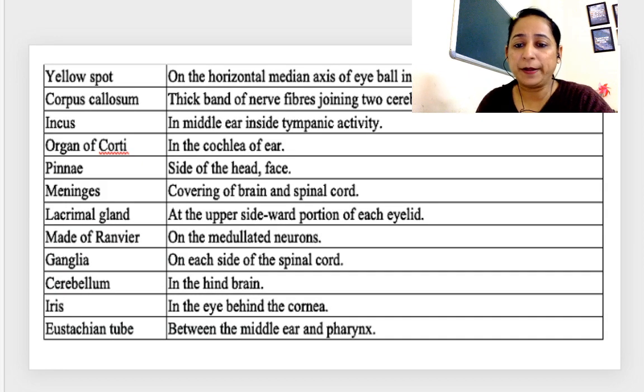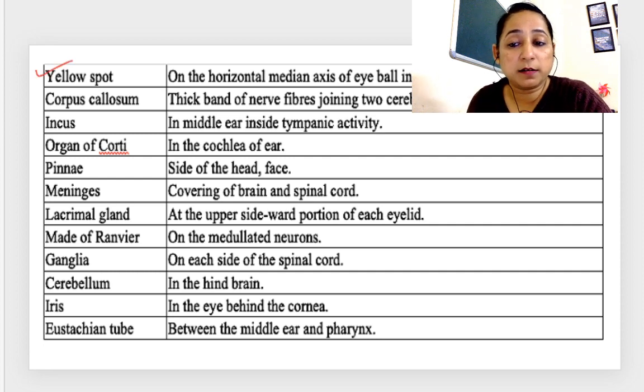Pulmonary vein arises from lungs, pours the blood in left auricle. Semi-lunar valves of the heart, located in the arteries leaving the heart. Bundle of His arises from atrio-ventricular node, moves along the interventricular septum.